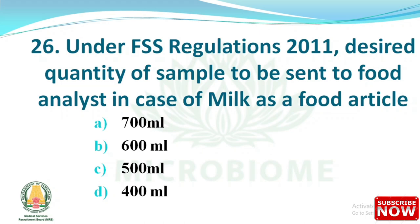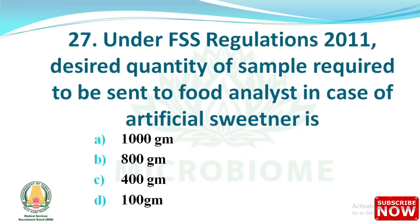Next question: under FSS Regulations 2011, the desired quantity of sample to be sent to a food analyst in the case of milk is — options: 700 ml, 600 ml, 500 ml, 400 ml. The right answer is option C, 500 ml. Next question: for artificial sweetener, the required quantity is — options: 1000 g, 800 g, 400 g, 100 g. The right answer is option D, 100 gram.